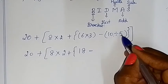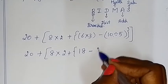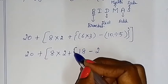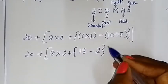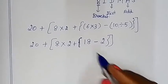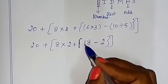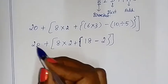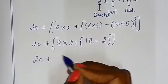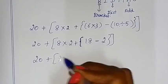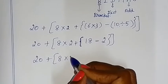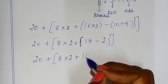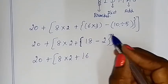10 divided by 5 is 2. Now we close the curly bracket and close the square bracket. So we have: 20 plus, square bracket open, 8 into 2 plus, curly bracket: 18 minus 2 is 16. Now the curly bracket is solved, and we close the square bracket.